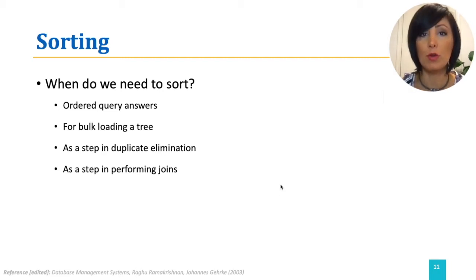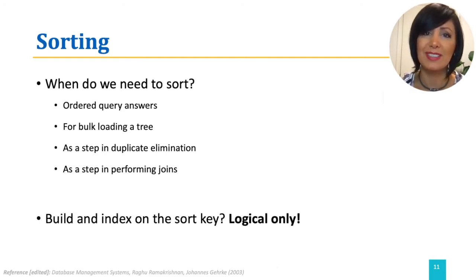How do we perform sort? You might say by building an index on the sort key and then using that key to read the relation in a sorted order. Well, that is only logical. What if you actually need physical ordering of the data, as in the applications we just discussed?